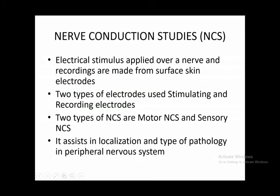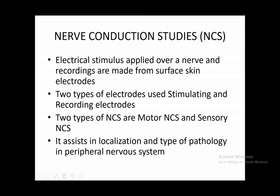Nerve conduction studies (NCS) involve applying an electrical stimulus over a nerve and making recordings from surface skin electrodes. Two types of electrodes are used: stimulating electrodes and recording electrodes. There are two types of nerve conduction studies — motor nerve conduction studies and sensory nerve conduction studies. NCS assists in localization and identification of the type of pathology in the peripheral nervous system.